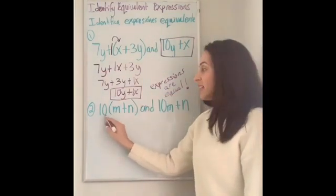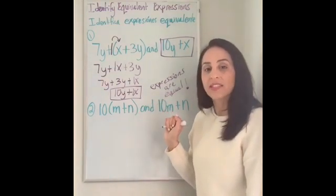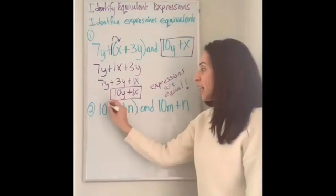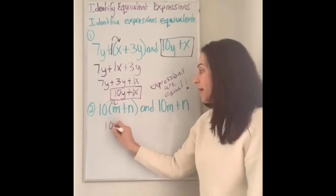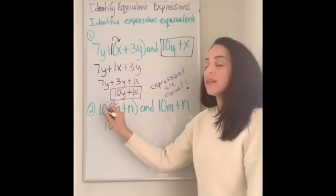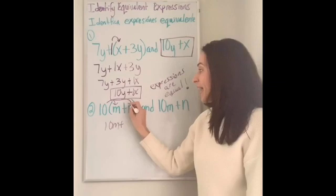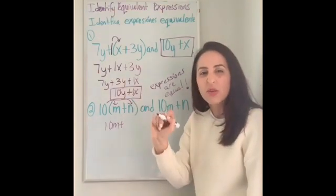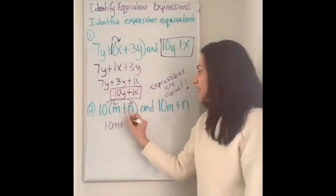And so the 10 is standing outside the house, knocking on the door. So 10 times m becomes 10m plus 10 times n. You notice I'm putting those arrows. Do that on your paper, put those arrows, 10n.